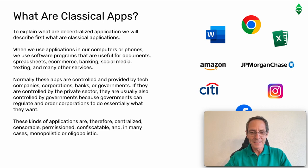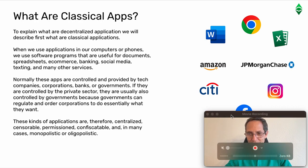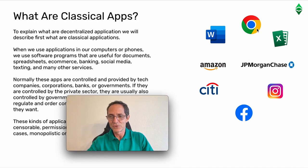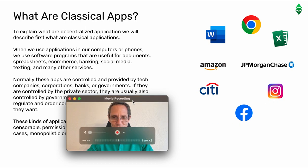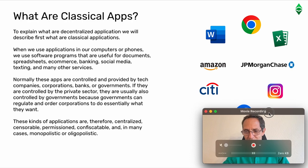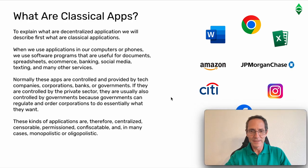These kinds of applications are therefore centralized, censorable, permissioned, confiscatable, and in many cases monopolistic or oligopolistic. Some examples include Google services, Microsoft services, Amazon for e-commerce, banks like Citibank and JP Morgan, and Instagram and Facebook as social services. You are interacting with these centralized tech companies and corporations.